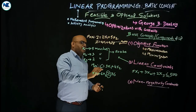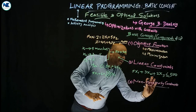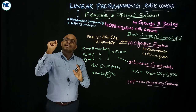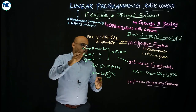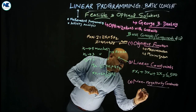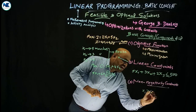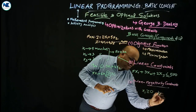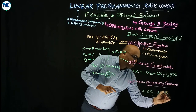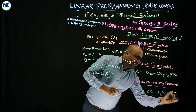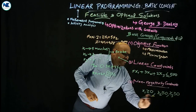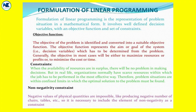The third concept is non-negativity conditions. Inputs or outputs cannot be negative. So we write: x1 ≥ 0, x2 ≥ 0, x3 ≥ 0. For however many variables there are, we apply this format. These are called non-negativity constraints or non-negativity conditions.